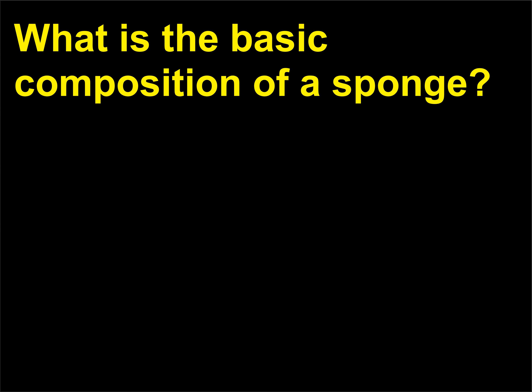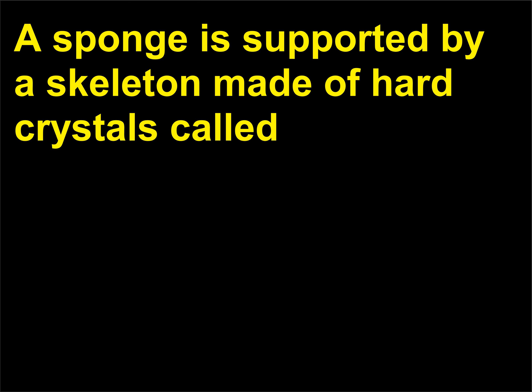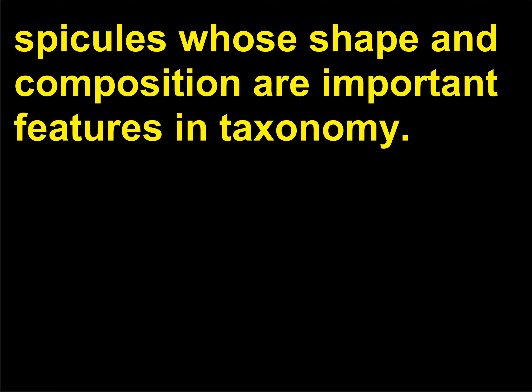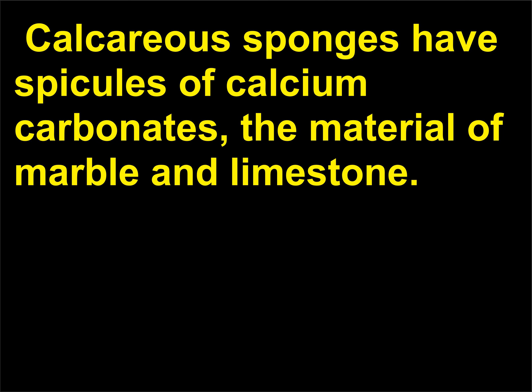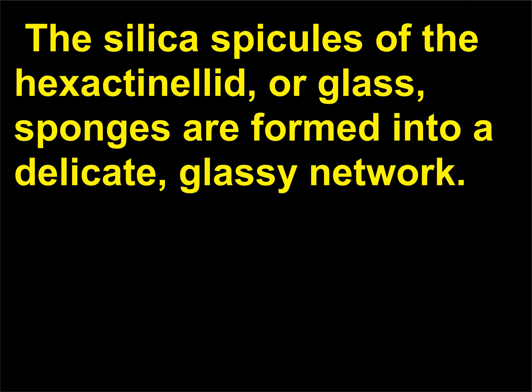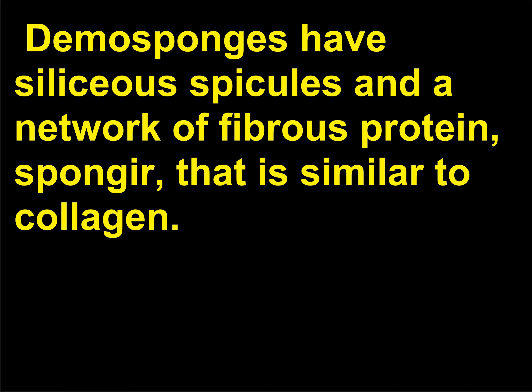What is the basic composition of a sponge? A sponge is supported by a skeleton made of hard crystals called spicules, whose shape and composition are important features in taxonomy. Calcareous sponges have spicules of calcium carbonate, the material of marble and limestone. The silica spicules of the hexactinellid, or glass, sponges are formed into a delicate, glassy network. Demosponges have siliceous spicules and a network of fibrous protein — spongin — that is similar to collagen.